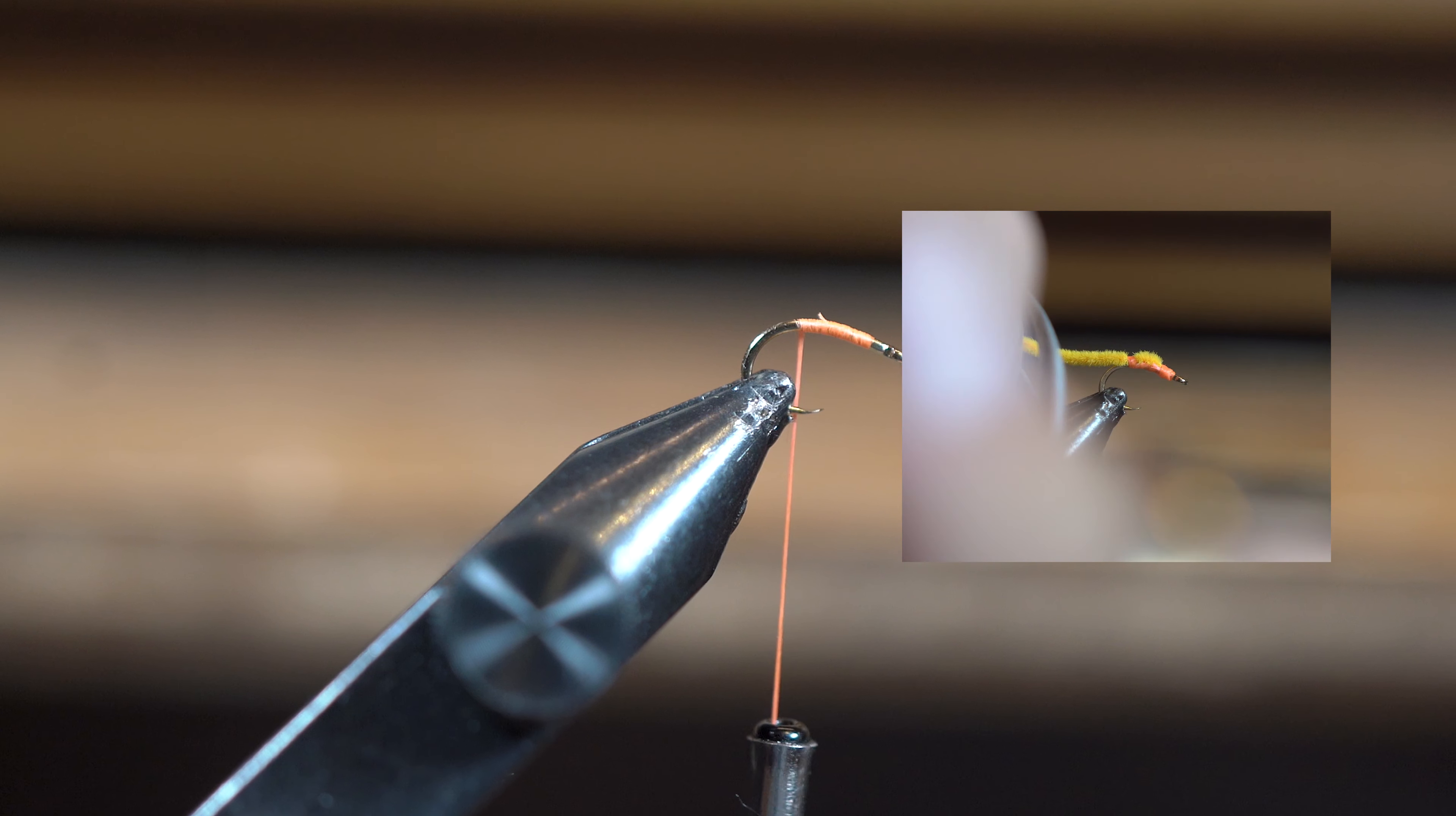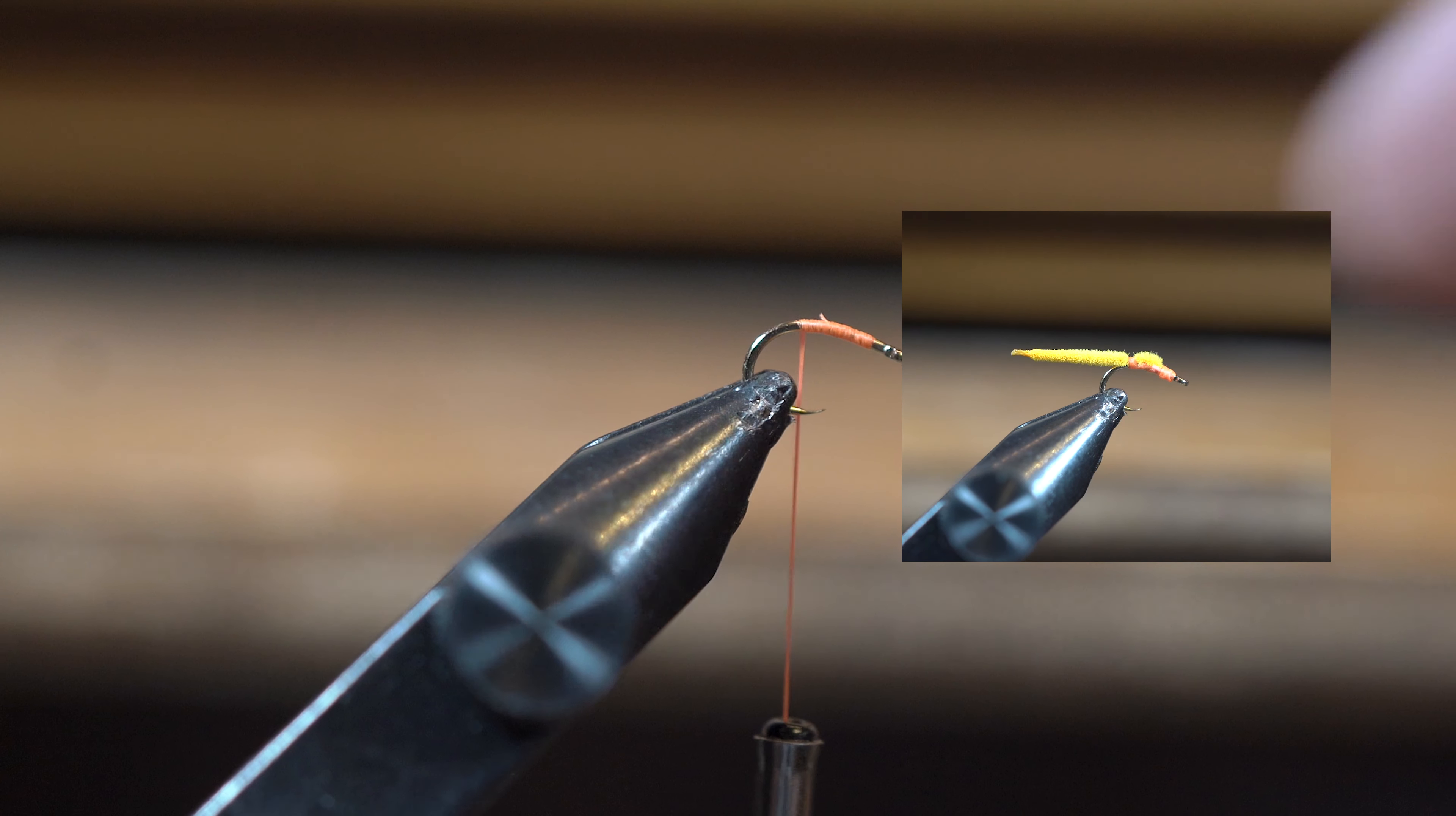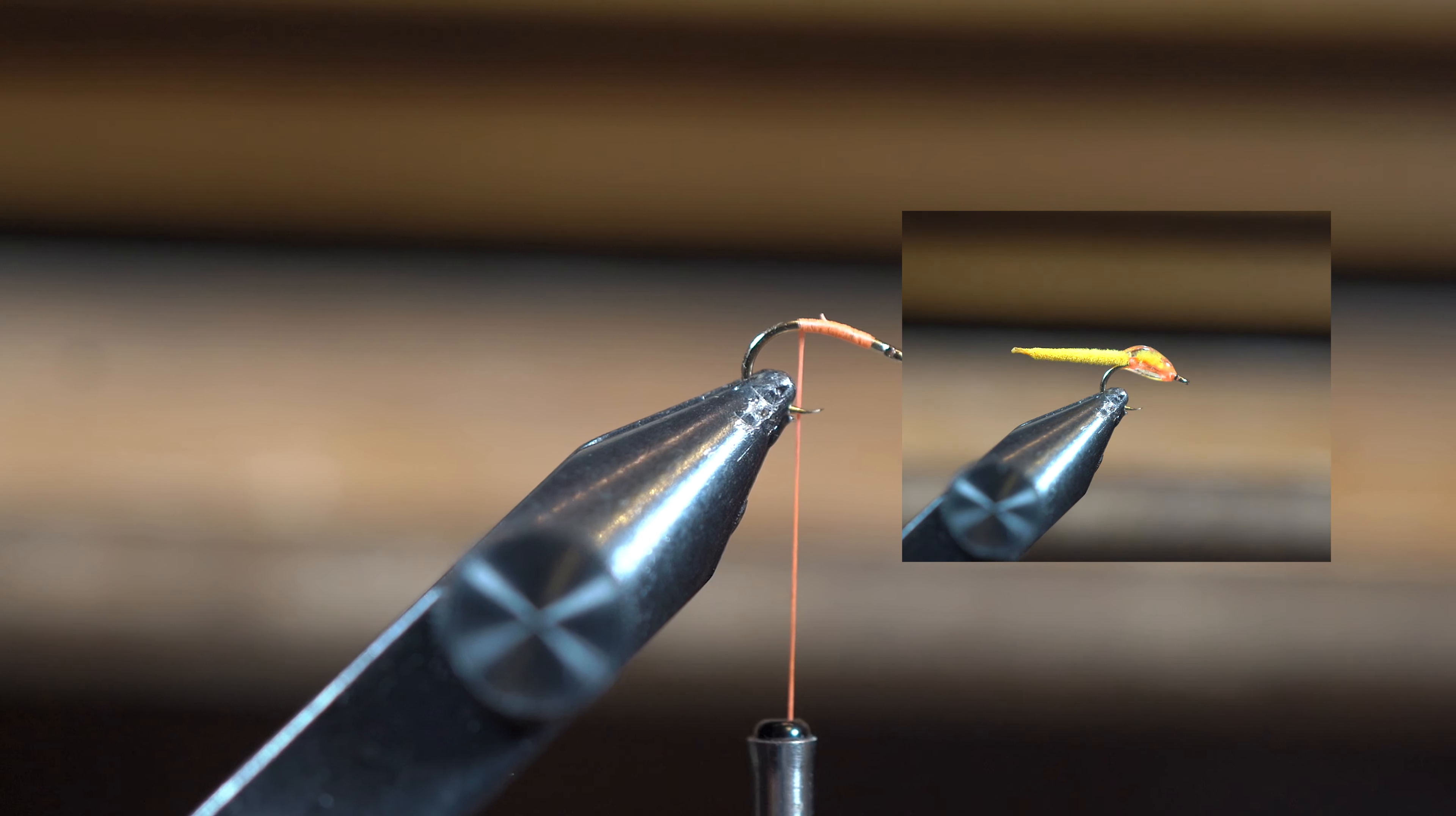Hello fly tiers, this is Aaron at the Fly Desk on the Fanaticals channel, and today I'm going to show you a simple little worm pattern I call the Micro Worm.